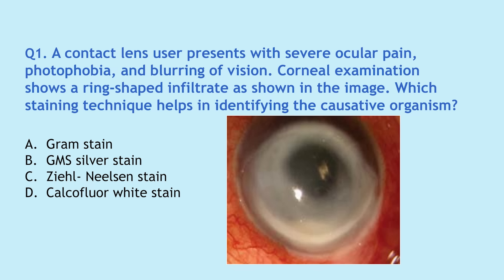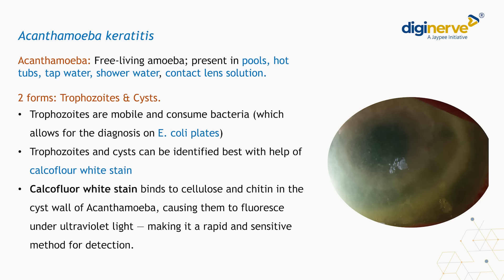First things first, we need to know what the causative organism is. The causative organism most likely is Acanthamoeba, as the clinical picture is quite prominently showing a ring-shaped infiltrate, which is a typical feature of Acanthamoeba keratitis. Acanthamoeba is a free-living amoeba present in pools, hot tubs, tap water, shower water, and contact lens solutions — and our patient was a contact lens wearer. Acanthamoeba presents in two forms: as trophozoites and as cysts. Trophozoites and cysts can be identified best with the help of calcofluor white stain, which binds to the cellulose and chitin in the cyst wall of Acanthamoeba, causing them to fluoresce under ultraviolet light, making it a rapid and sensitive method for detection.